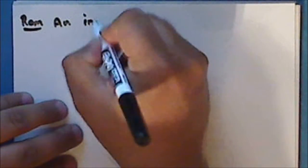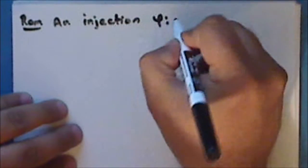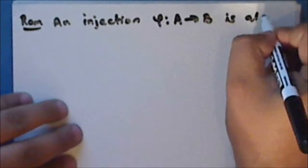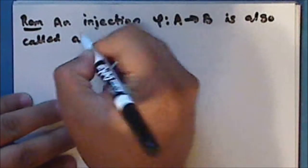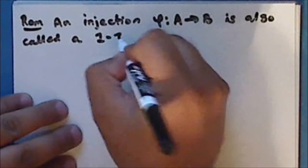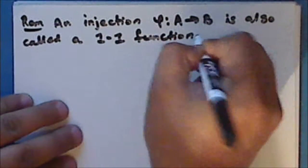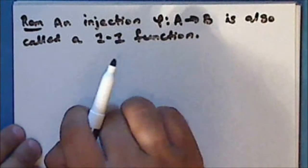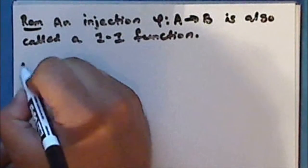An injection is also called a one-to-one function, since distinct elements in the set A are mapped onto distinct elements in the set B.